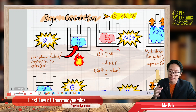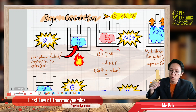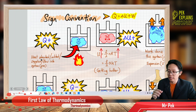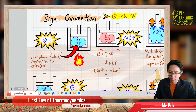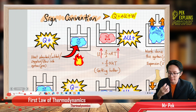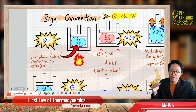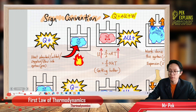That means heat from the surrounding goes into the gas. When heat goes into the gas — absorbed, added, supplied, or flowed in — we put Q positive. For example, when I heat up the gas, the heat is actually absorbed into the gas, so we put Q positive.